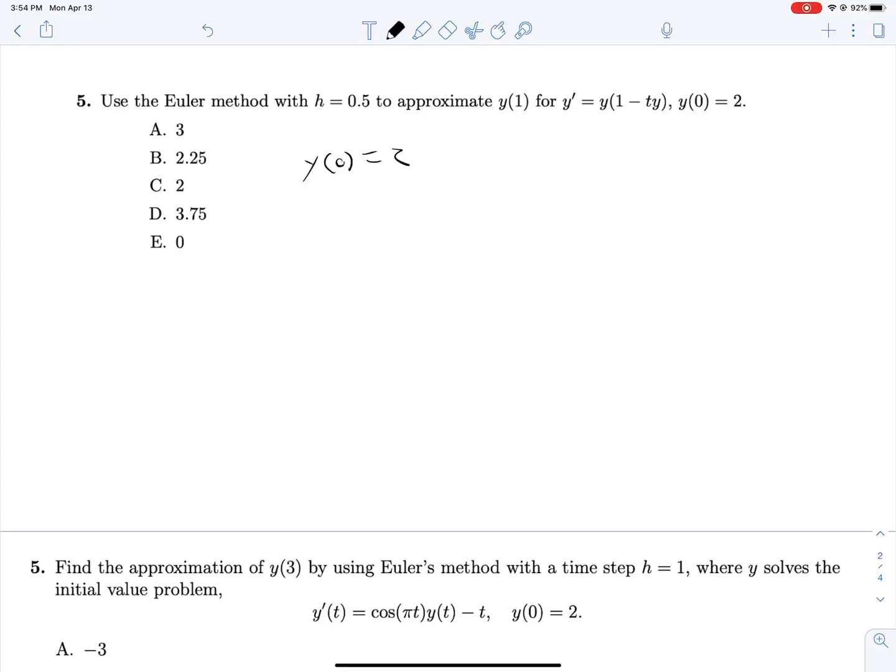So our next step up is going to be y at 0.5, because we always jump up by exactly one h value, and this will be our most recent value for y, which is 2 plus our h value, 0.5, multiplied by y prime evaluated at our most recent known condition. So that's 2 times 1 minus 0 times 2. So 1 minus 0, this just evaluates to 2, and we get 3.